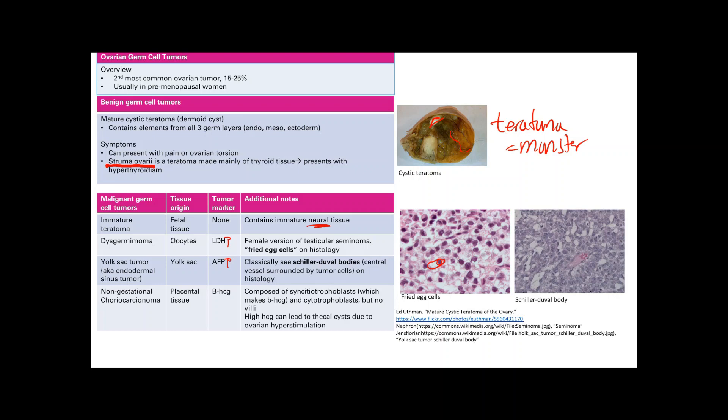The last cancer is the non-gestational choriocarcinoma. I say non-gestational because often choriocarcinoma is associated with pregnancy, and we're going to talk about that later. But this is non-gestational. It originates from placental tissue and placental tissue makes hCG, so beta-hCG will be up.